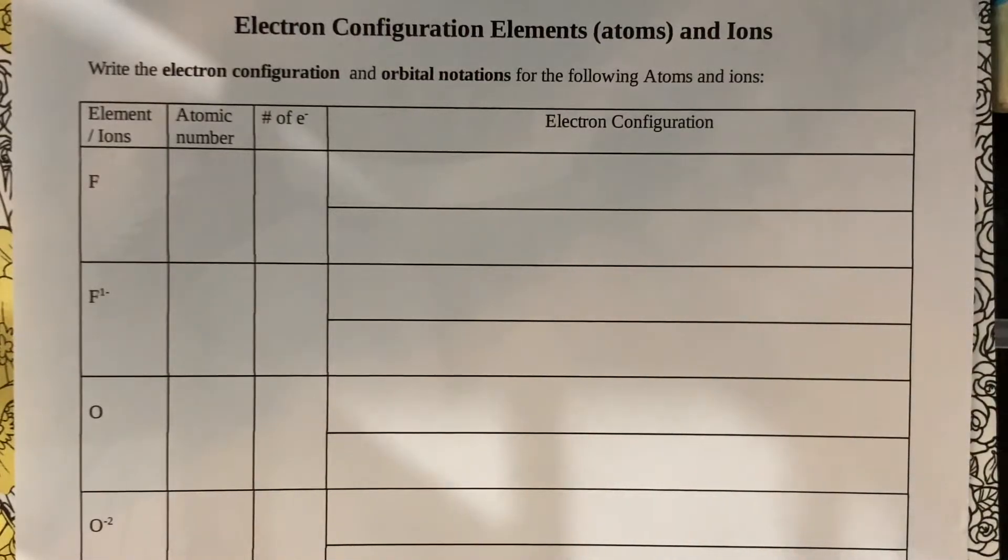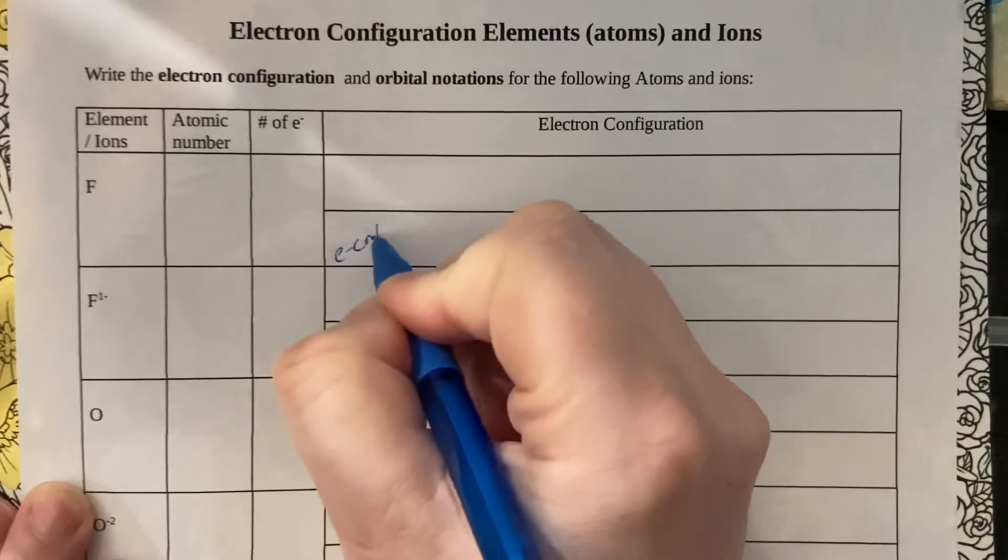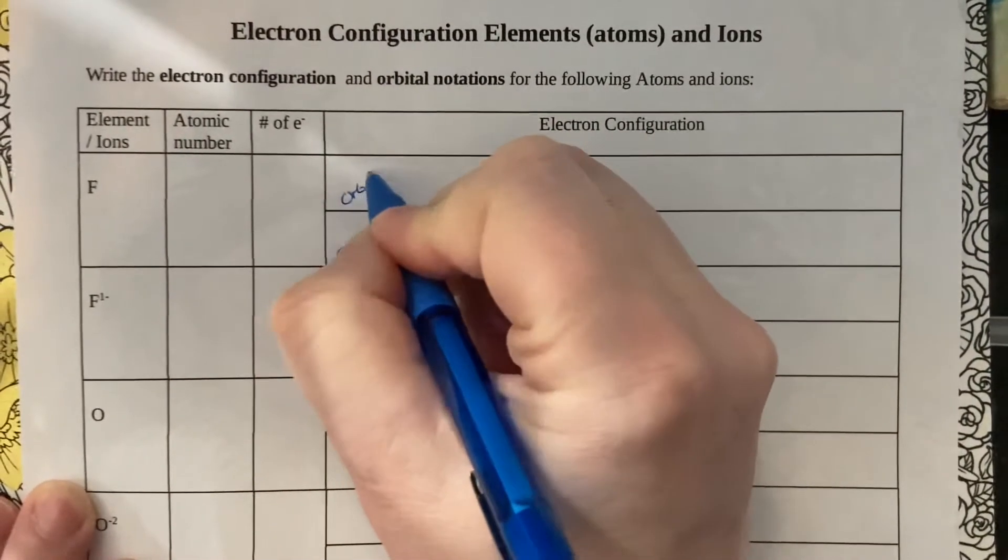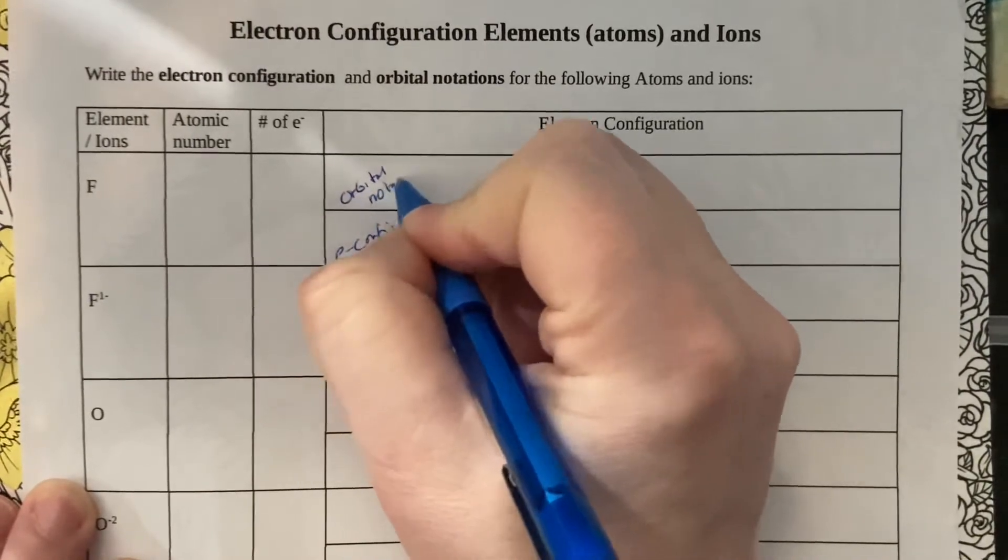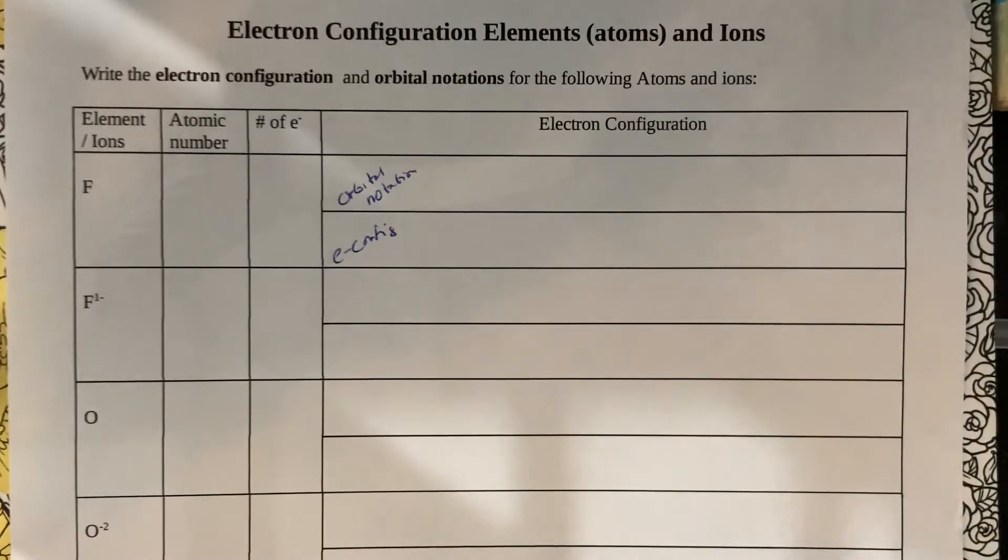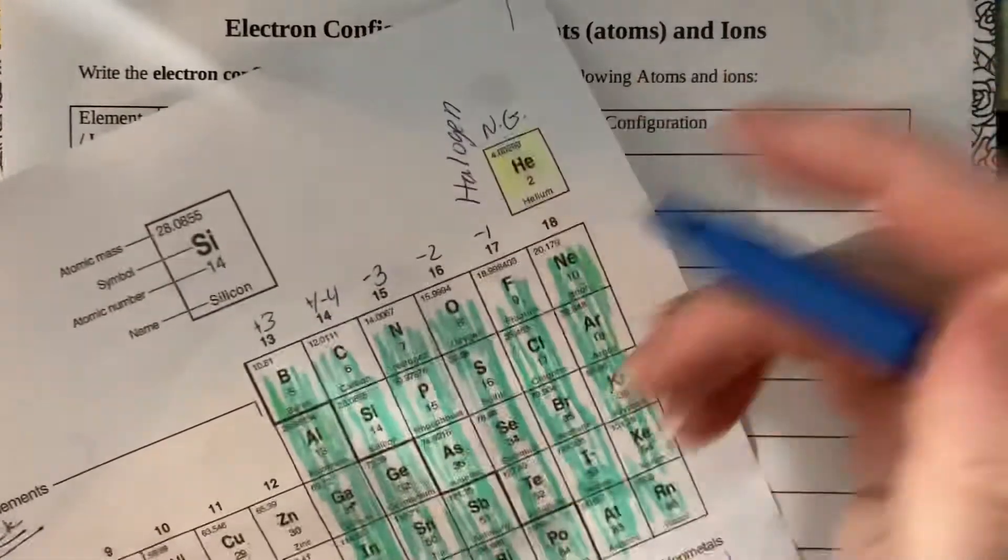Alright, so we're going to go through electron configuration and orbital notation. For each of these, you're going to write the electron configuration in the bottom cell and you're going to write the orbital notation at the top. Remember, the orbital notation is those arrows, and electron configuration is when you're writing out what each one is.